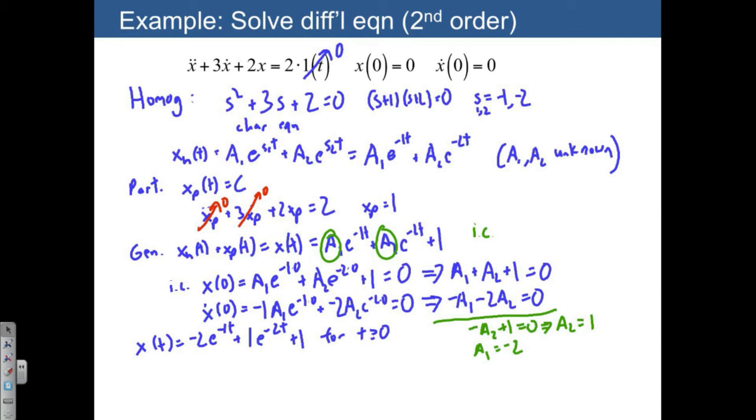Again, we can plug in the initial conditions. For example, if we were interested in x of 0, we would see that if you plug in time 0, you get negative 2 plus 1. In other words, minus 1 plus 1 is equal to 0. So that's good news. We can check that off.